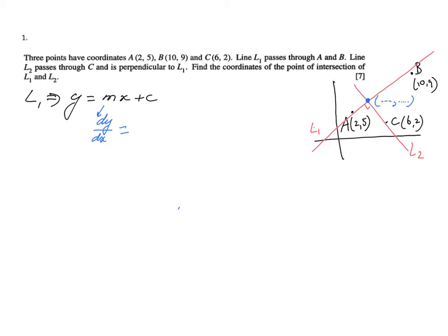What is the difference in the y direction? It goes from 9 to 5, so the difference 9 minus 5 over the difference in the x direction from 10 to 2, so 10 minus 2. 9 minus 5 is 4 over 8, so that is 1 over 2. So the equation for line 1 already looks like y equals a half x plus c.